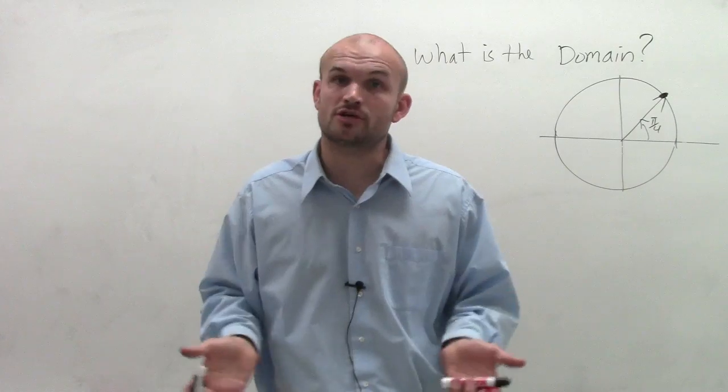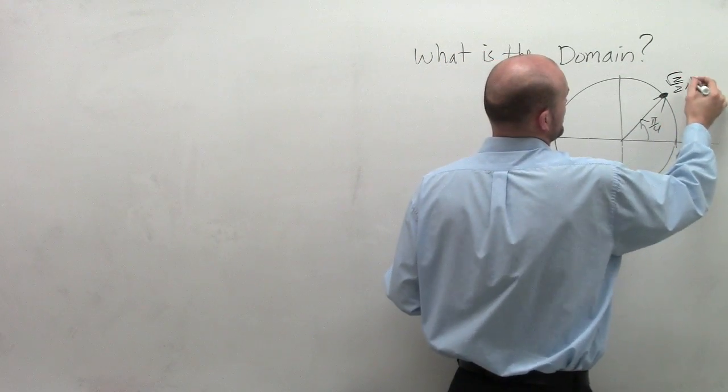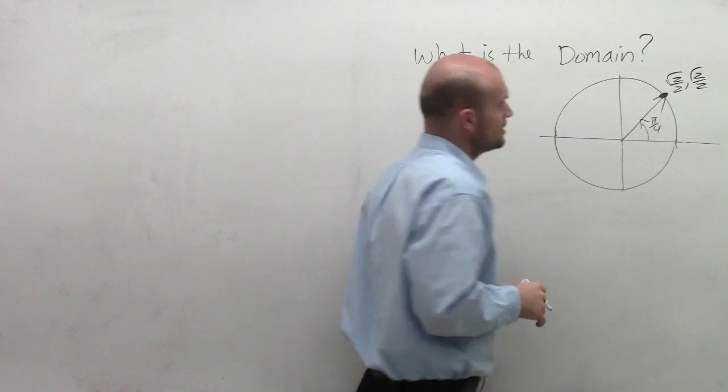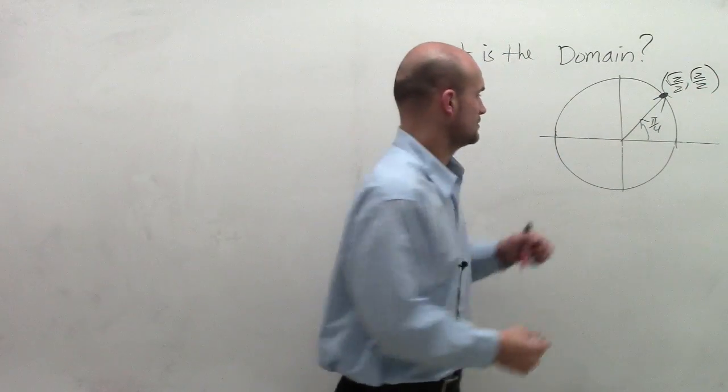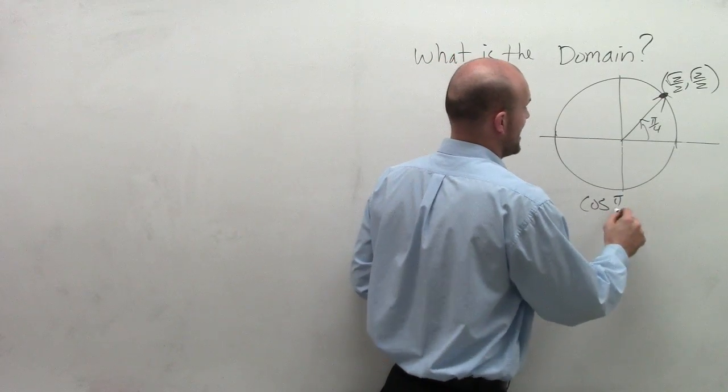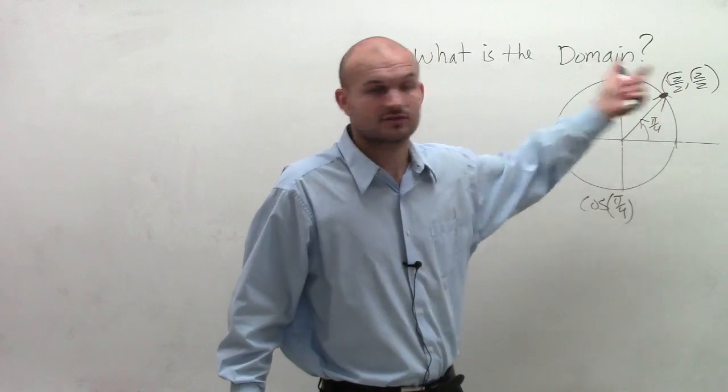Now, if I said I wanted to find a coterminal angle, what we did is we said, well, let's look at this point: square root of 2 over 2 comma square root of 2 over 2. So if I wanted to find the cosine of pi over 4, well, that's going to relate to the x coordinate of that point with the square root of 2 over 2.